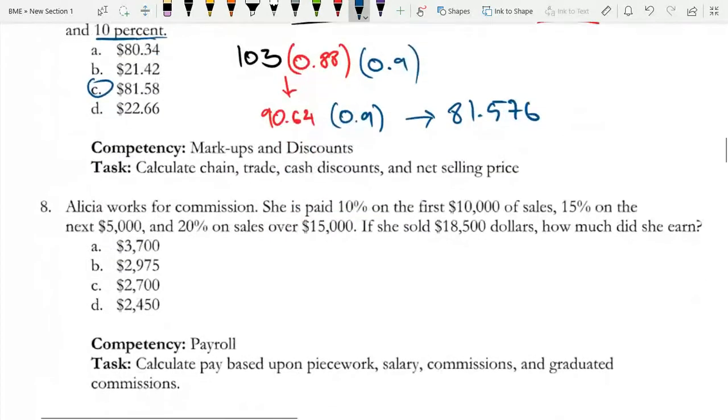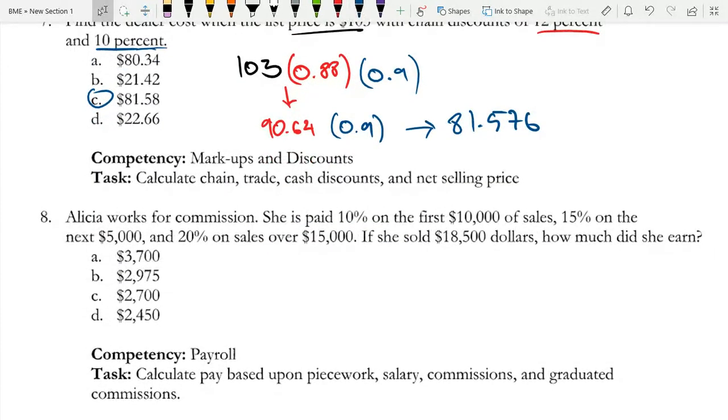Now we'll go on to our last and final problem. Alicia works for commission. She is paid 10% on the first $10,000 of sales, 15% on the next $5,000, and 20% on sales over $15,000. If she sold $18,500, how much did she earn?